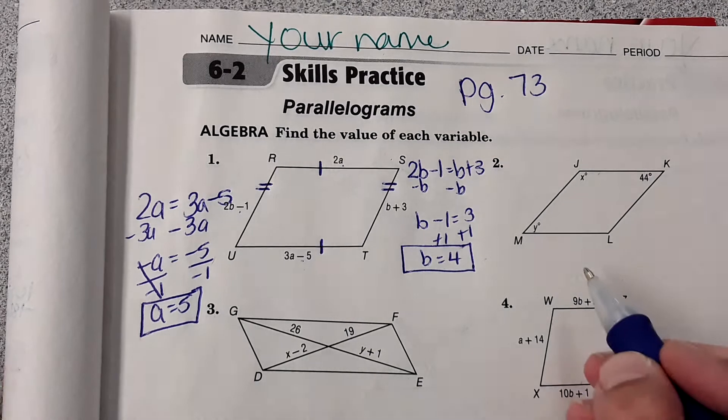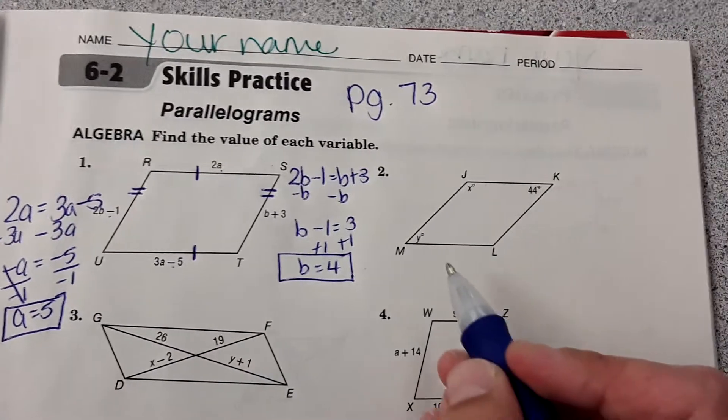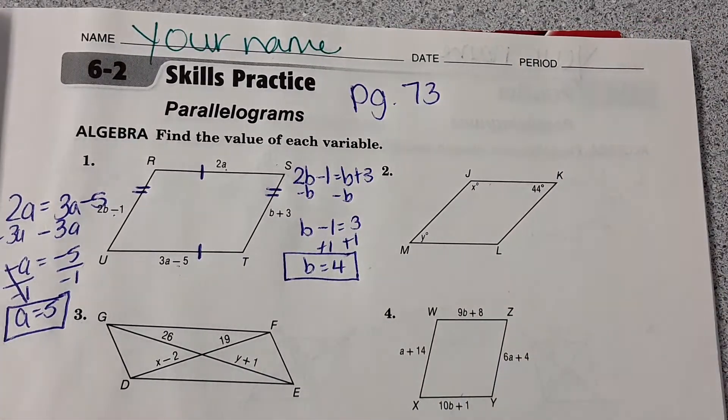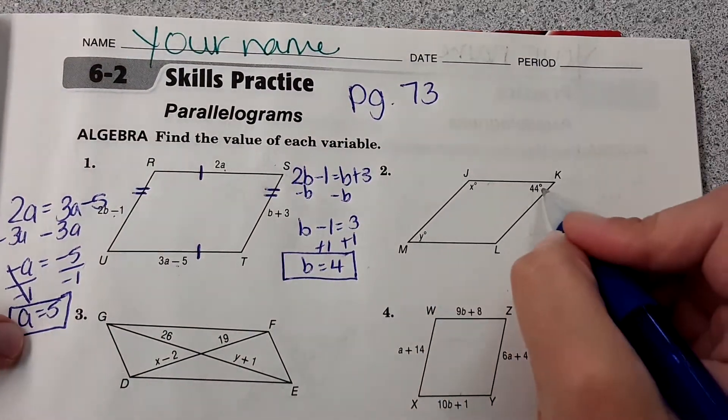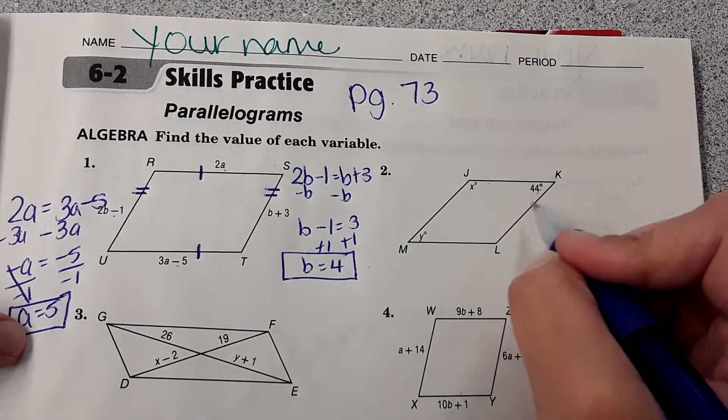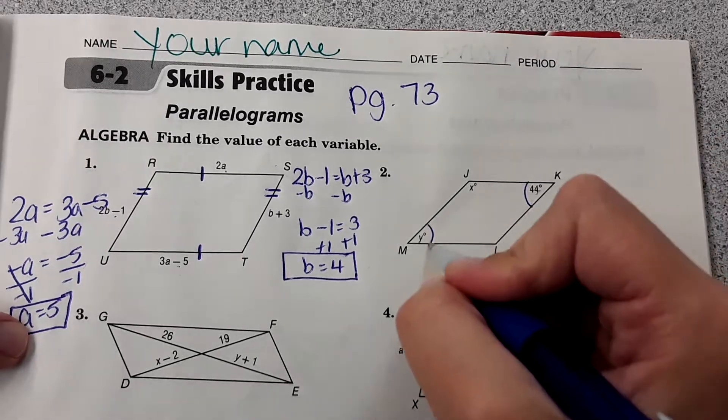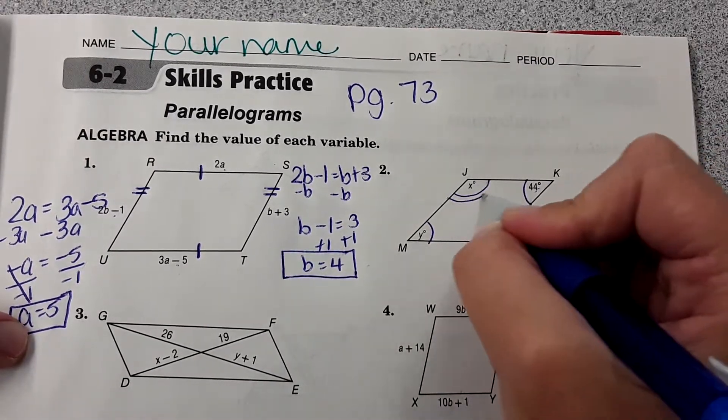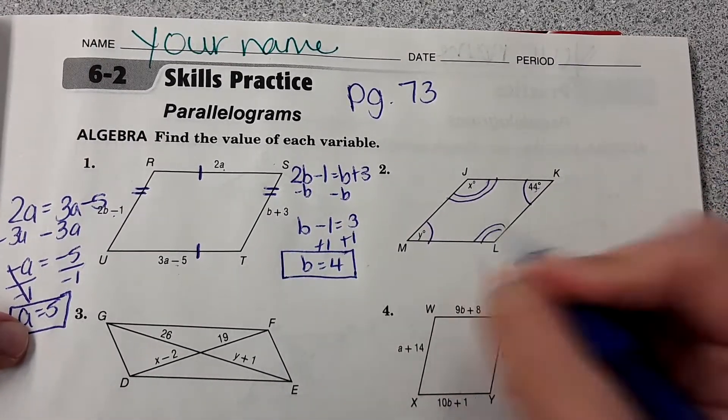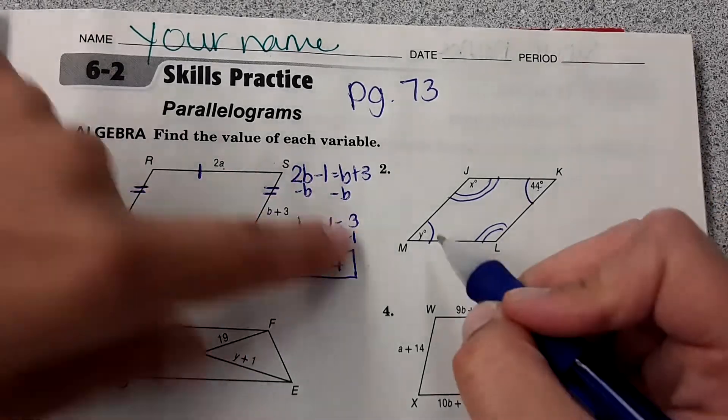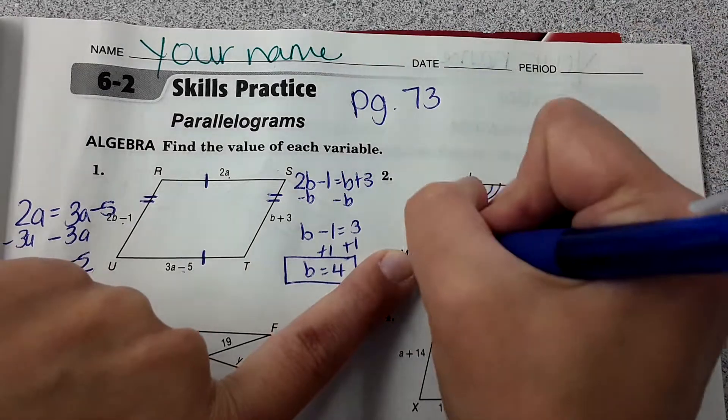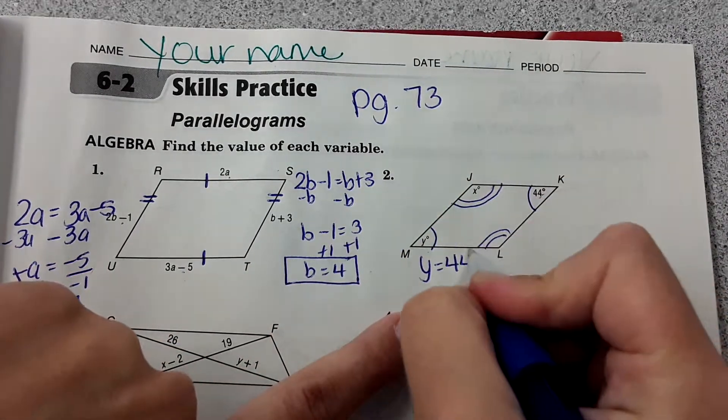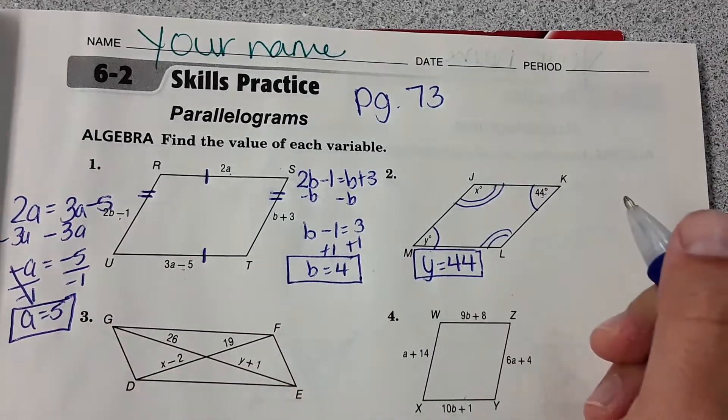Okay, number two. So this looks very similar, but they want you to use the rules differently. It's specifically talking about angle measure. One of the theorems stated that opposite angles are congruent, so therefore this angle is the same measure as this one, and this angle is the same measure of its opposite over here. That being said, y must be 44 degrees because those are congruent angles, so y equals 44.